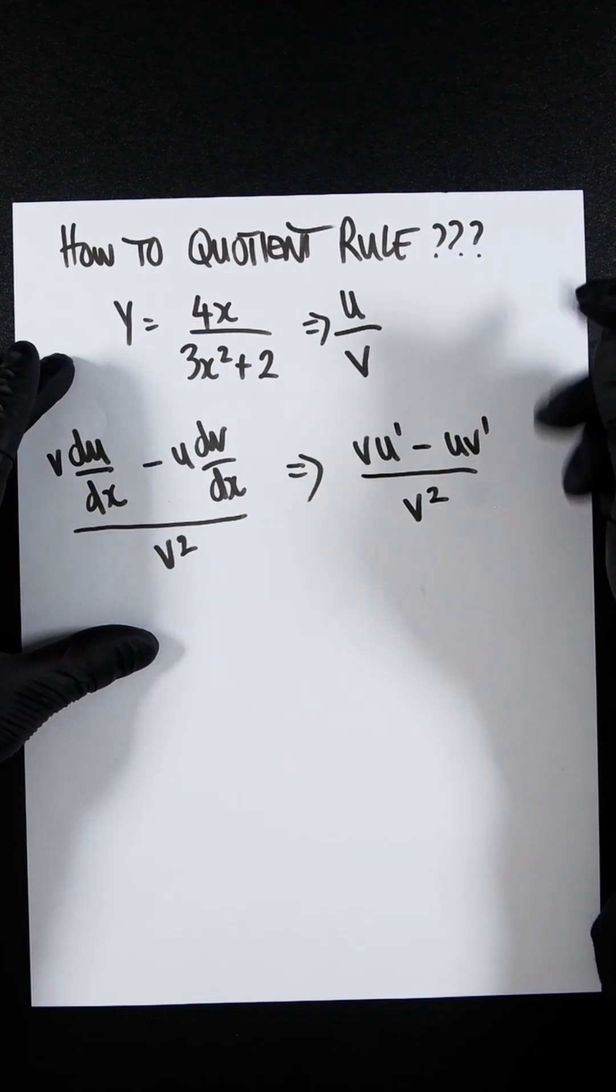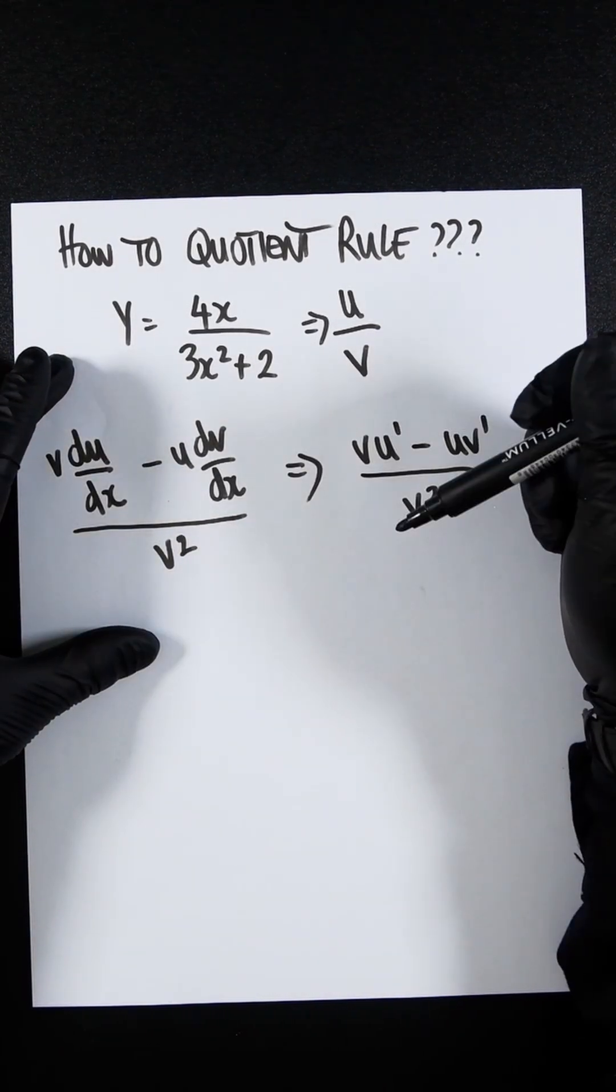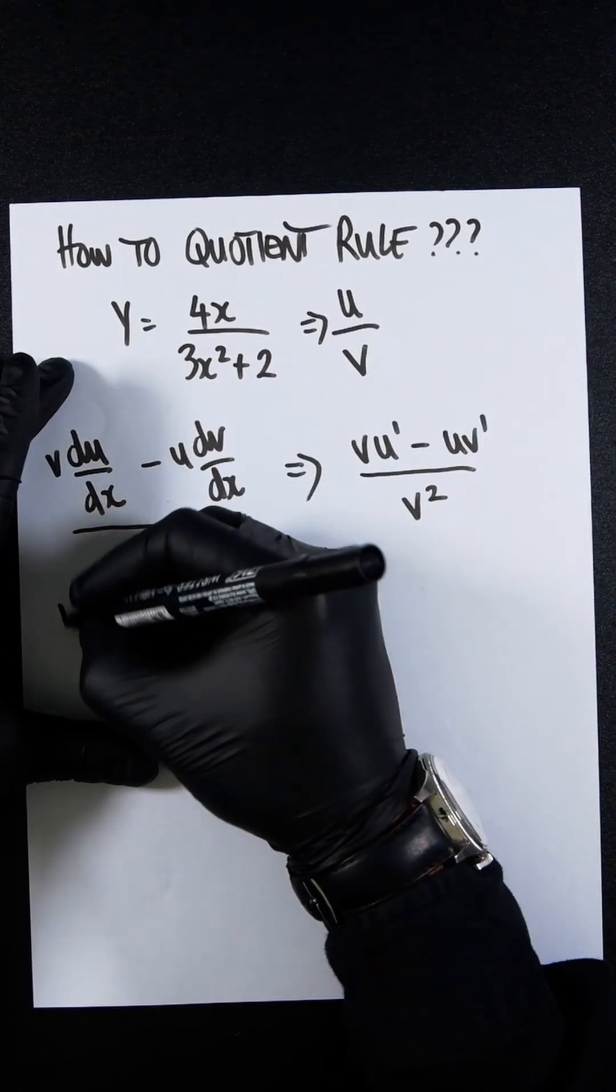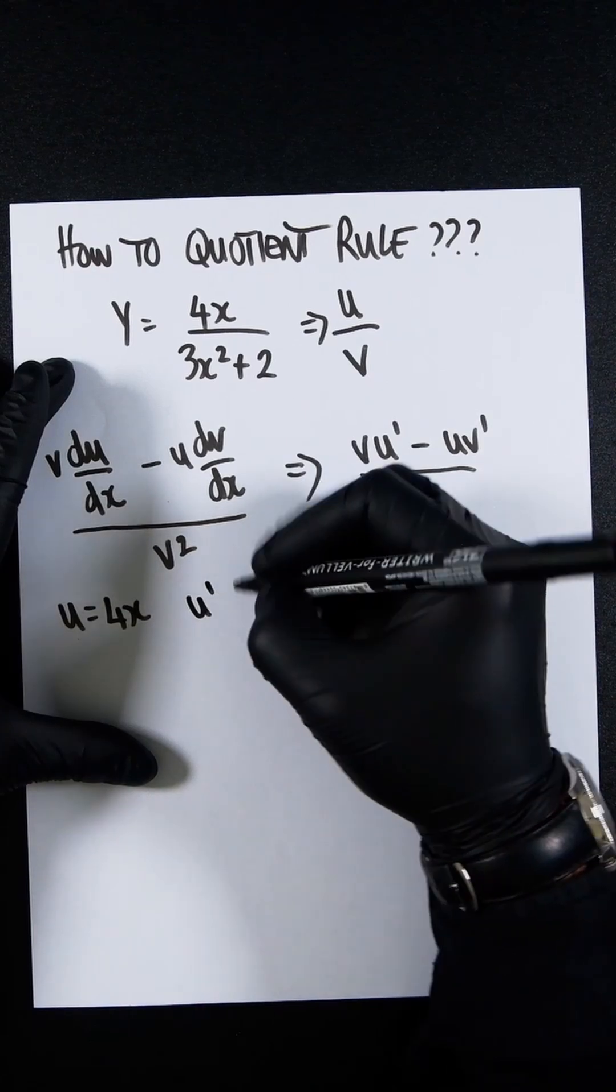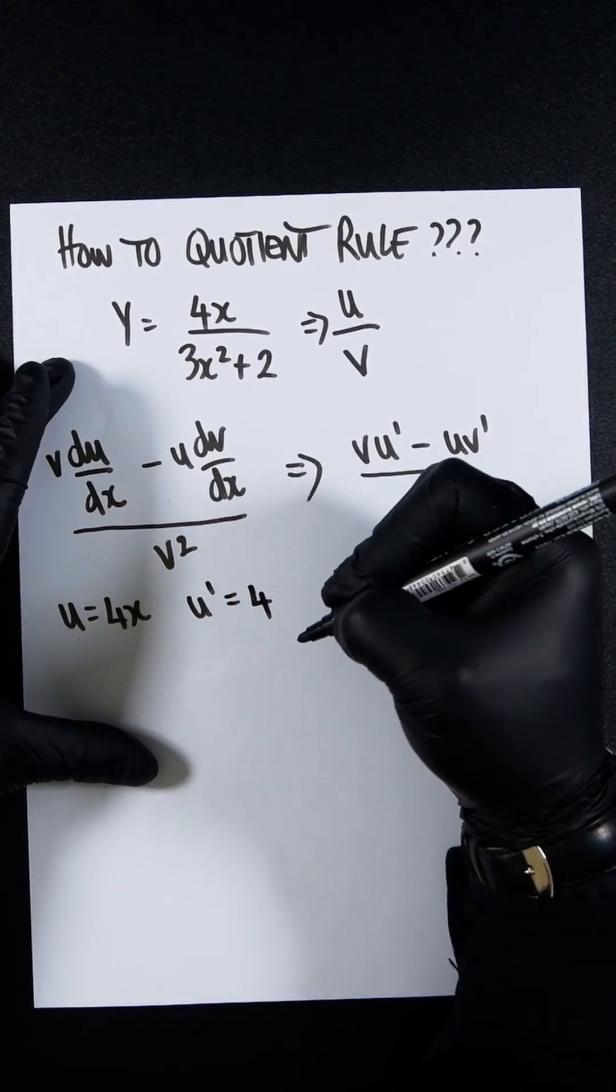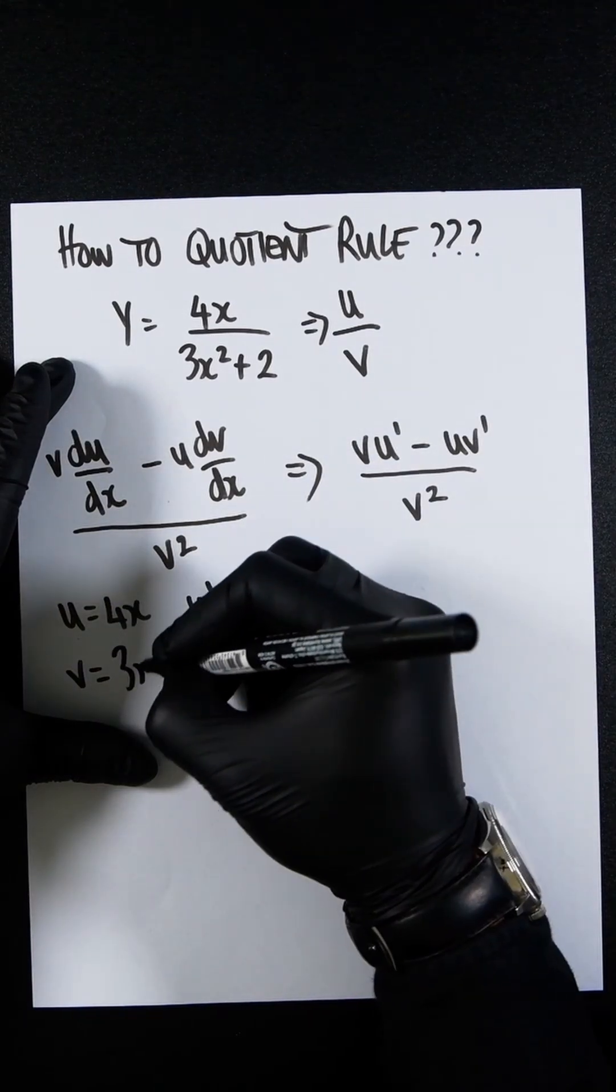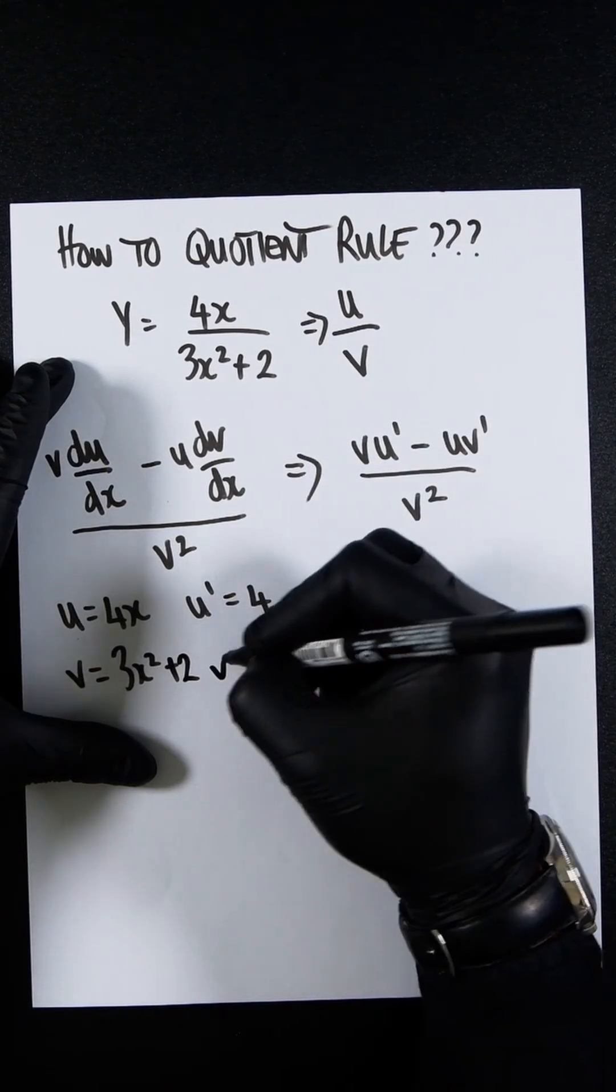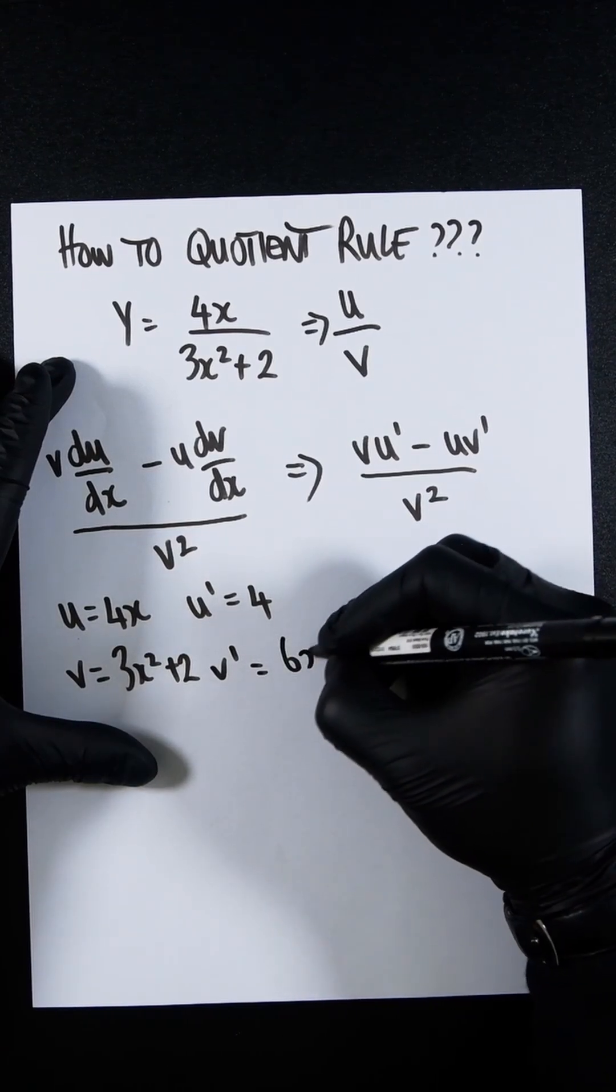u dash or v dash is the universal notation for something that has been differentiated once. So let's crack on. u equals 4x, so then u dash would equal 4. v would be 3x squared plus 2, so v dash would be 6x.